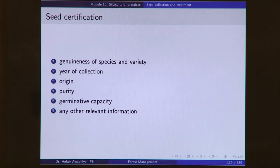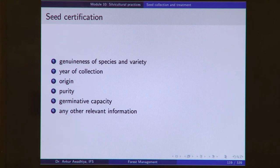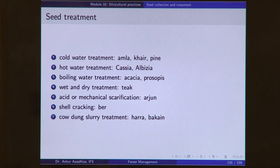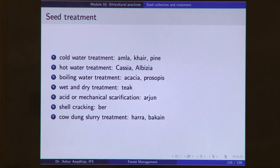These days we also go for seed certification, which tells us the genuineness of the species and variety, the year of collection, the origin or provenancing of the seeds, purity, germinative capacity, and any other relevant information. Before using, we put seeds through several treatments including cold water treatment, hot water treatment, boiling water treatment, wet and dry treatment, acid or mechanical scarification, and shell cracking or cowden slurry treatment. Different species' seeds may require different treatments to help them germinate.